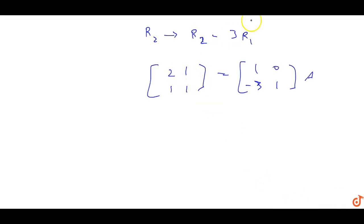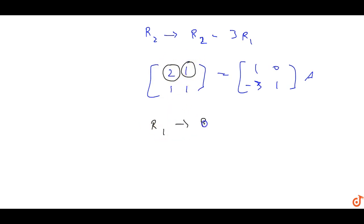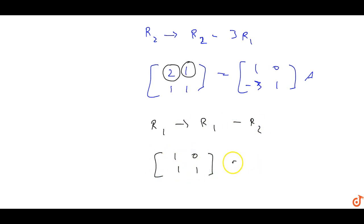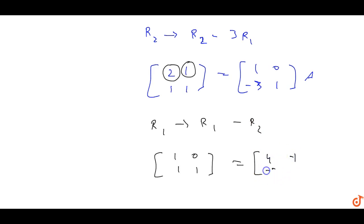Now R1 goes to R1 minus R2. So we get one zero — and it becomes one one equals two. One minus three, four one — sorry, minus one minus three and one — into A.